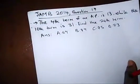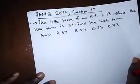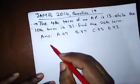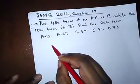Another question we have is JAMB 2014, question 19. The 4th term of an AP is 13, while the 10th term is 31. Find the 24th term.